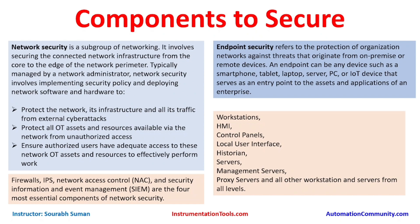Installing untested software may also impact process control performance. For example, if an antivirus is installed without prior testing, it could consume RAM and storage, causing the workstation to operate slowly or even stop working — creating an availability issue. In ICS environments, availability is the top priority. Therefore, we must first test solutions in an offline environment not connected to production systems, and only after the OEM has tested, approved, and stamped it should we implement it in production.